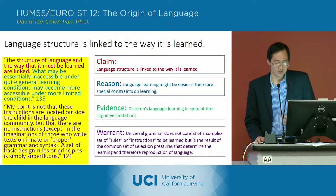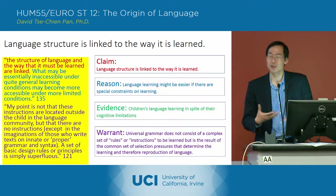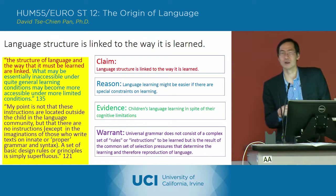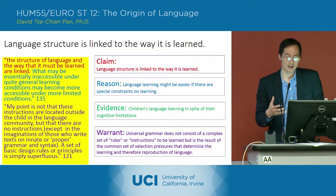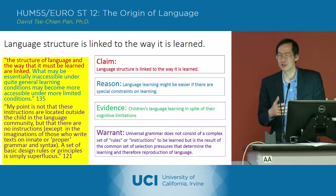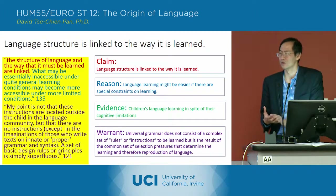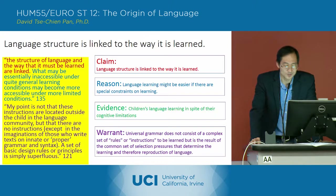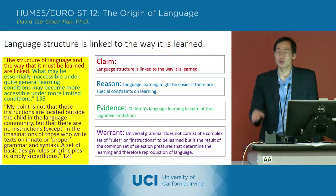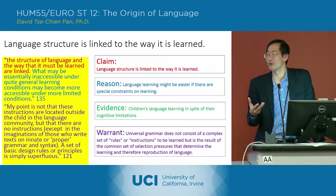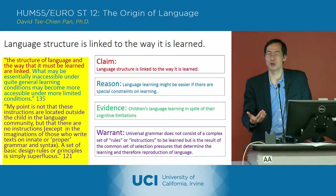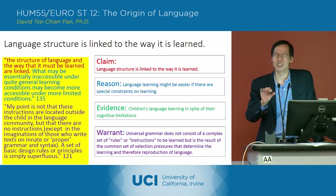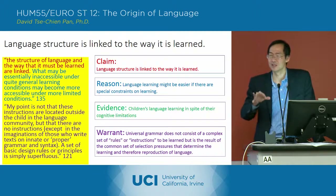He's saying that the way universal grammar functions — the way language is structured — is not something predetermined in the brain, but rather something determined by the way in which it has to be learned. There's a relationship between language structure and the style or constraints of learning that children have when learning language. Those constraints are defining for how language is going to be structured. In a sense, there is a selection pressure on language — if you think of language as an organism — to have structures that can be interpreted as simple, even if they can lead to more complexity later on.